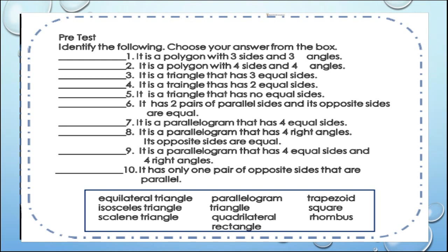Number 1: It is a polygon with 3 sides and 3 angles. Number 2: It is a polygon with 4 sides and 4 angles. Number 3: It is a triangle that has 3 equal sides. Number 4: It is a triangle that has 2 equal sides.